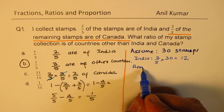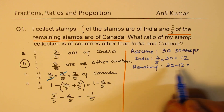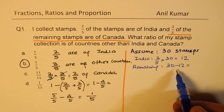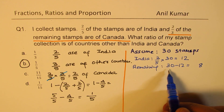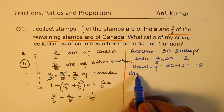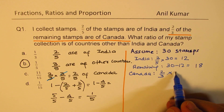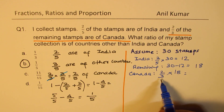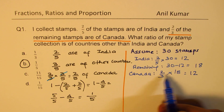Now the remaining is thirty minus twelve, which is eighteen. Two-thirds of the remaining stamps are of Canada, so for Canada we have two-thirds of eighteen. When you divide, eighteen goes six times; six times two is twelve. So Canada also gives you twelve stamps.